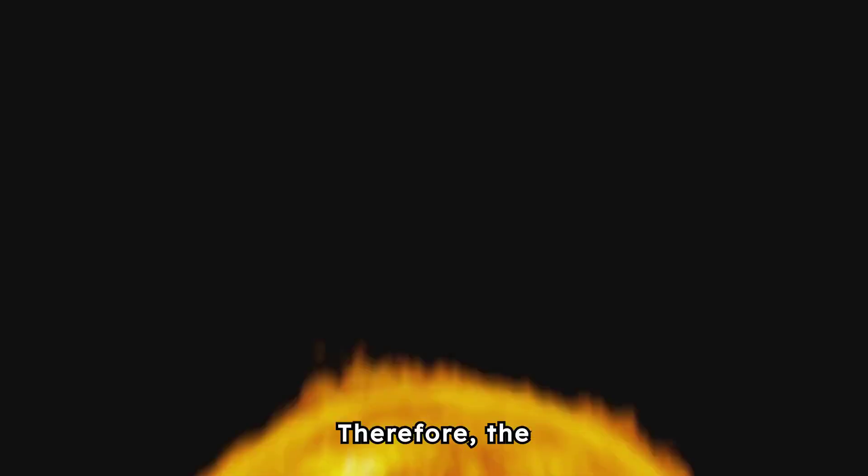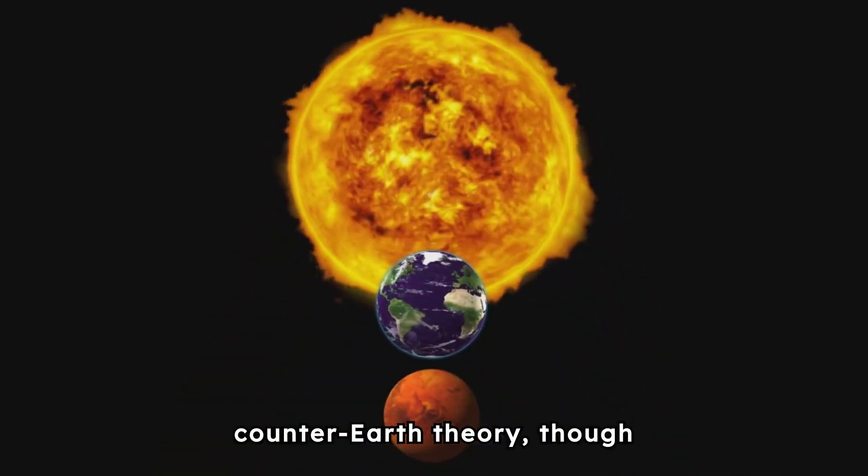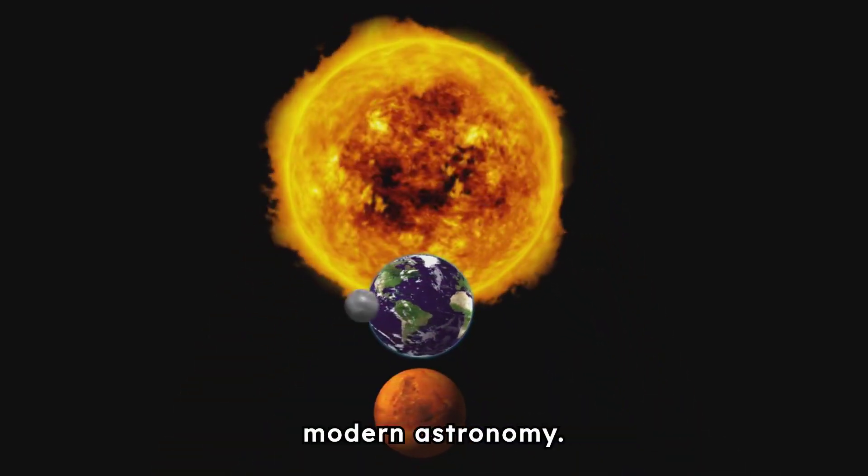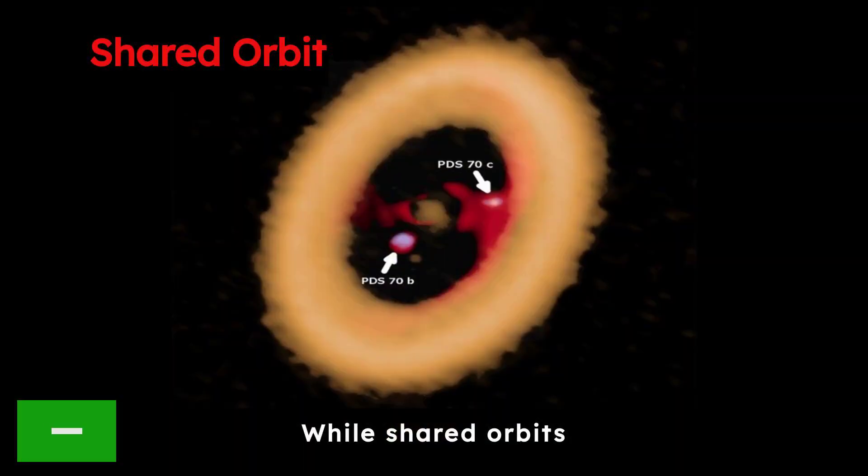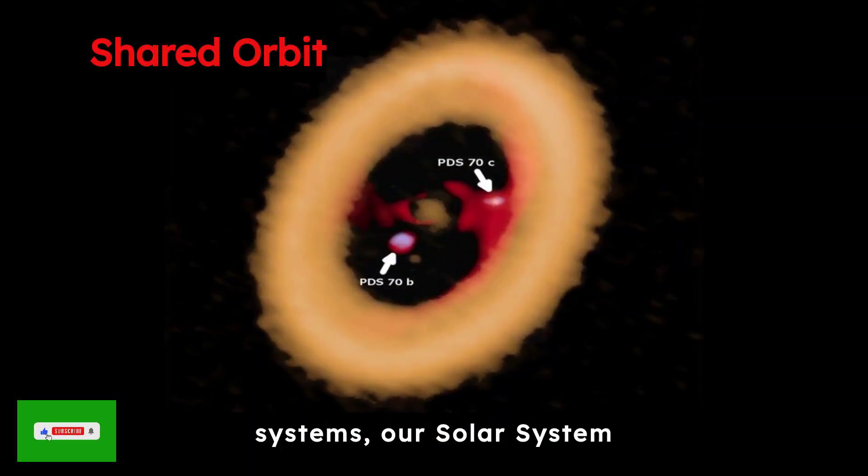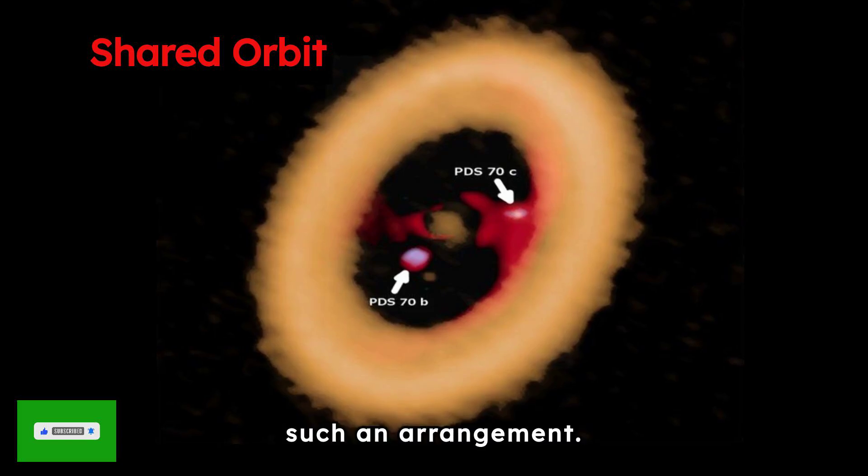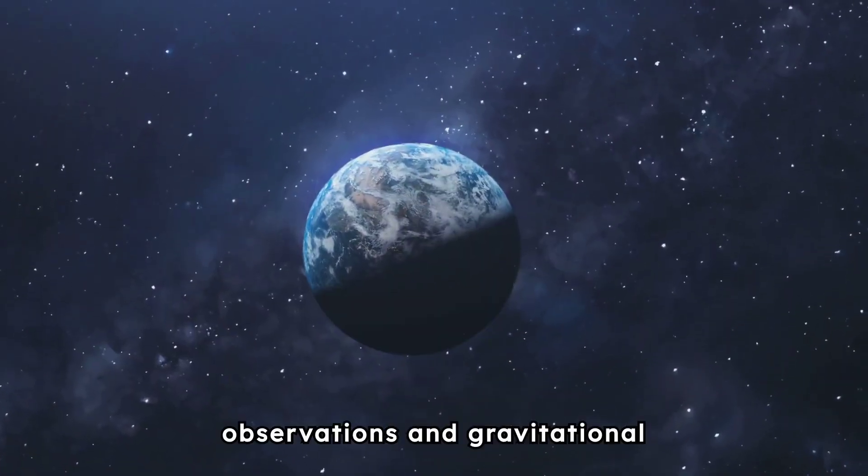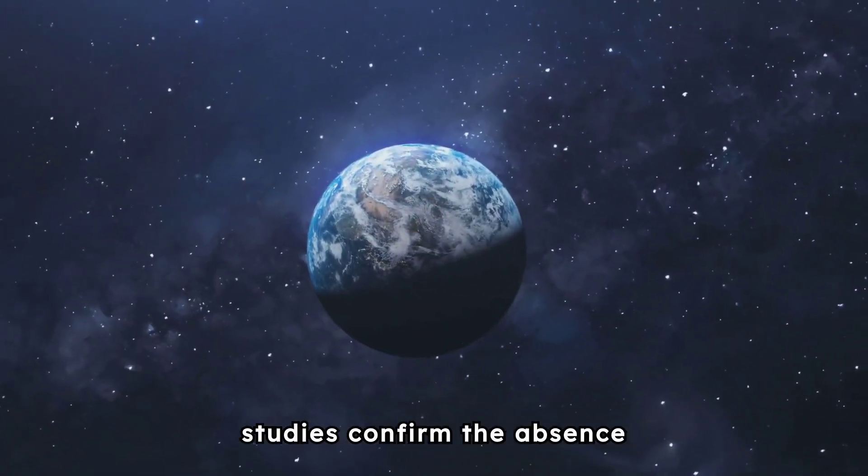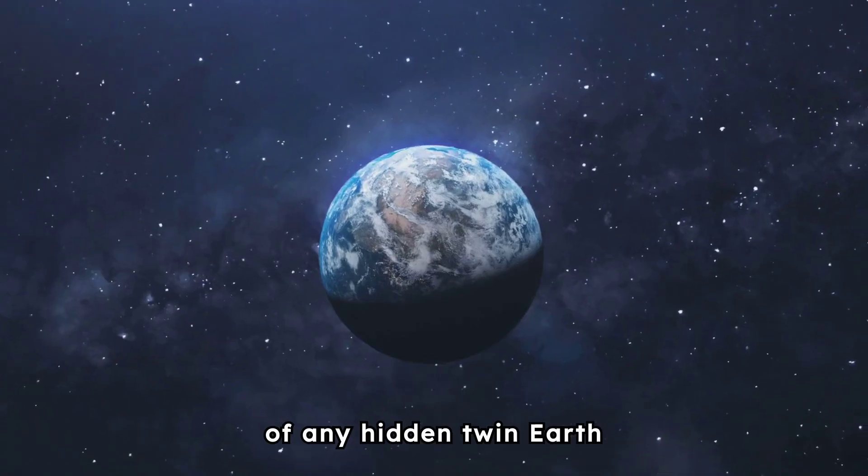Therefore, the counter-Earth theory, though fascinating, is debunked by modern astronomy. While shared orbits can exist in distant systems, our solar system lacks the conditions for such an arrangement. Advanced observations and gravitational studies confirm the absence of any hidden twin Earth behind the Sun.